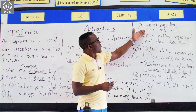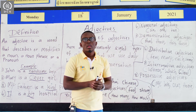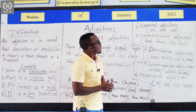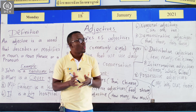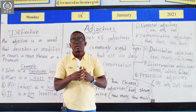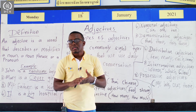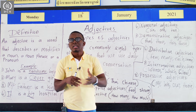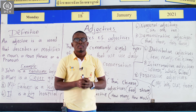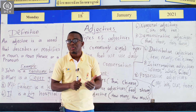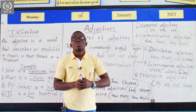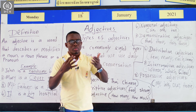Next, we have numeral adjectives. Numeral adjectives are used to describe numbers — 10, 20, 100, 50. For example: I have 10 books. She has 20 books. She is 10 years old. So they are used to describe numbers.